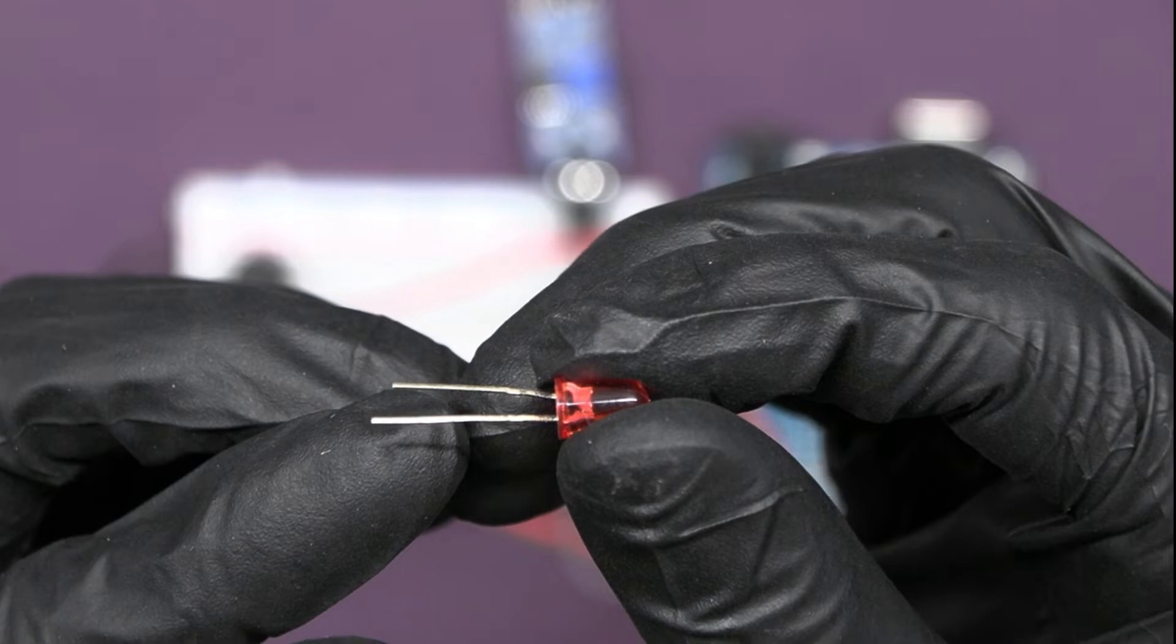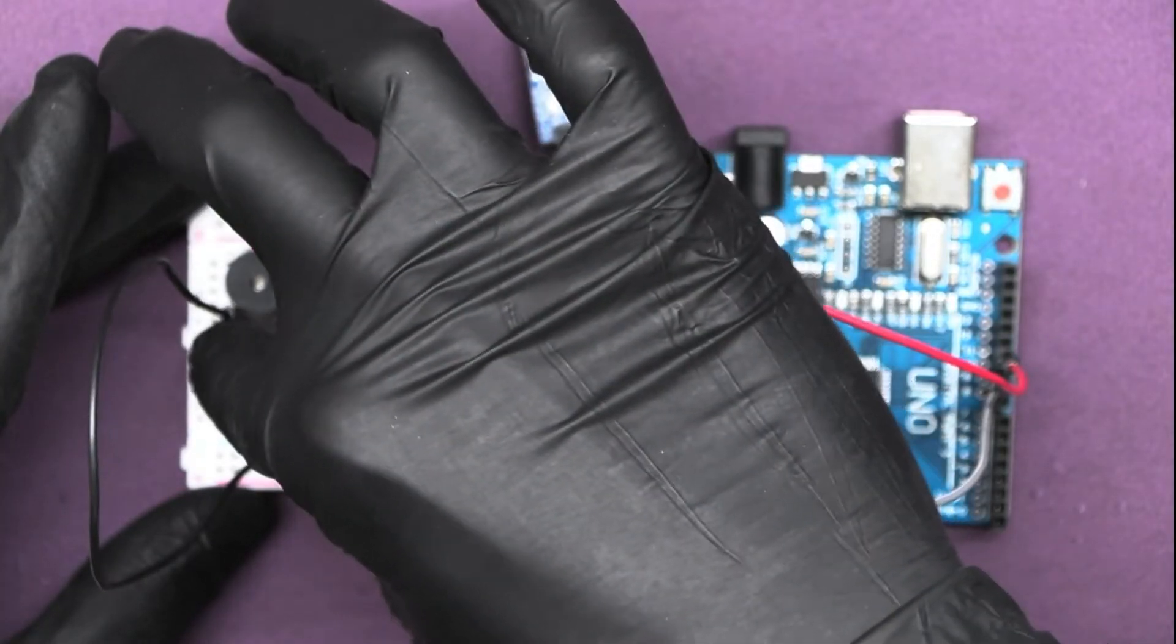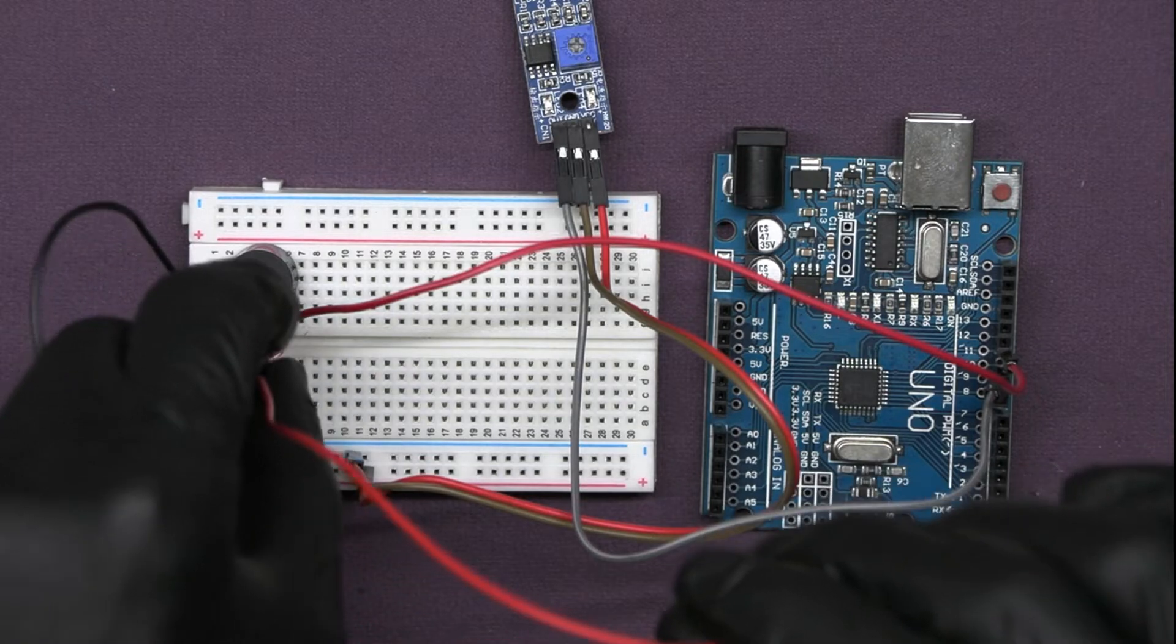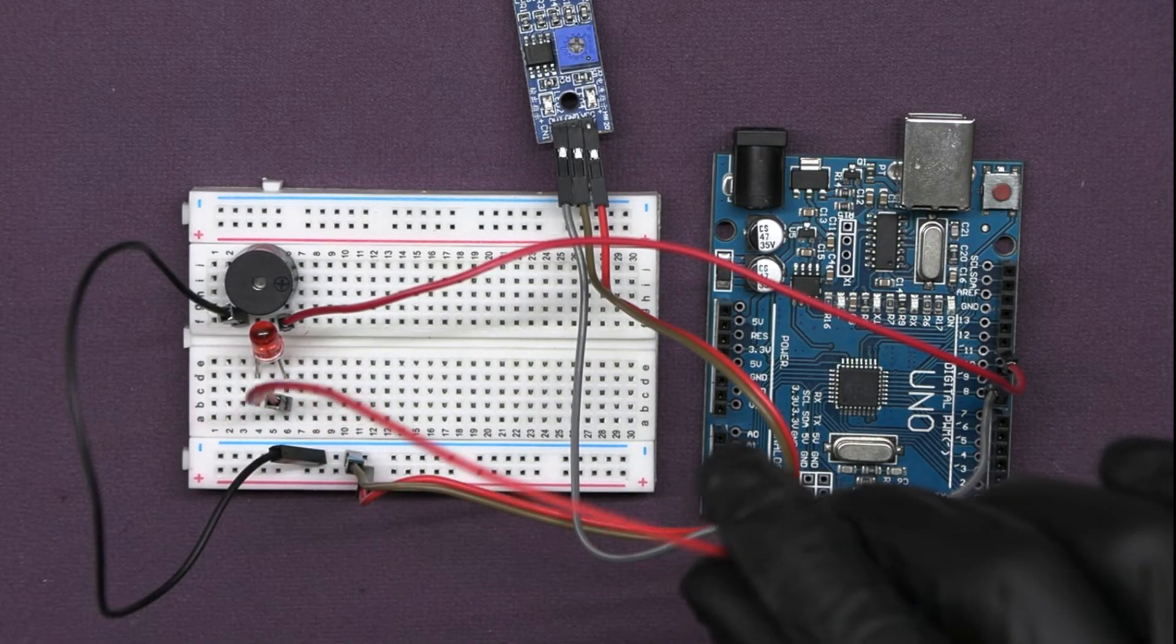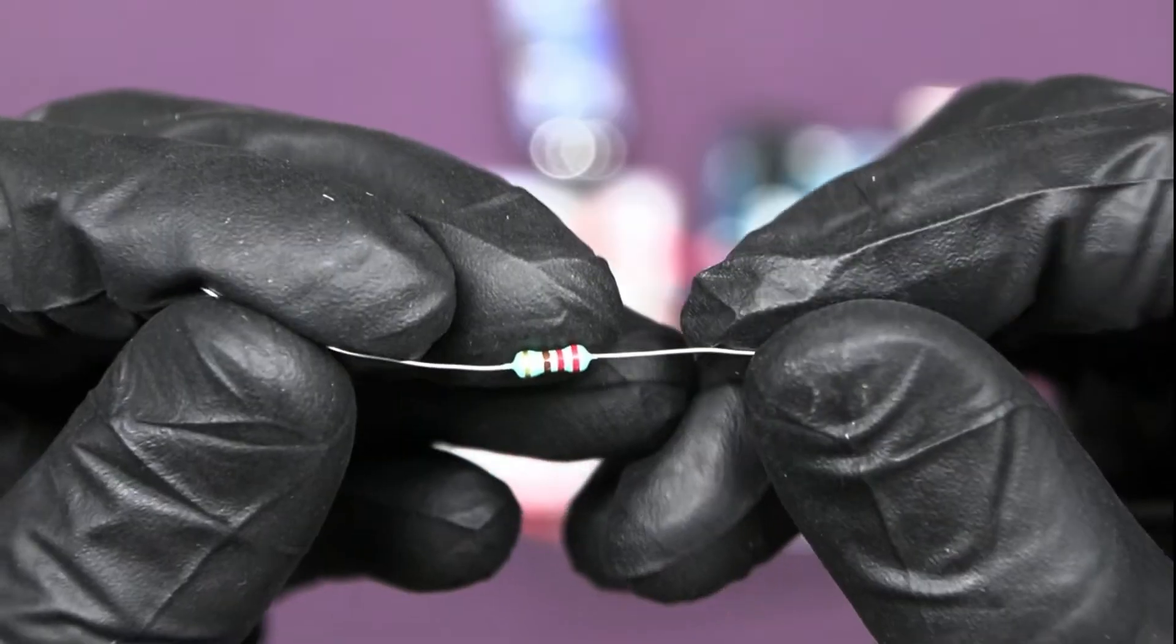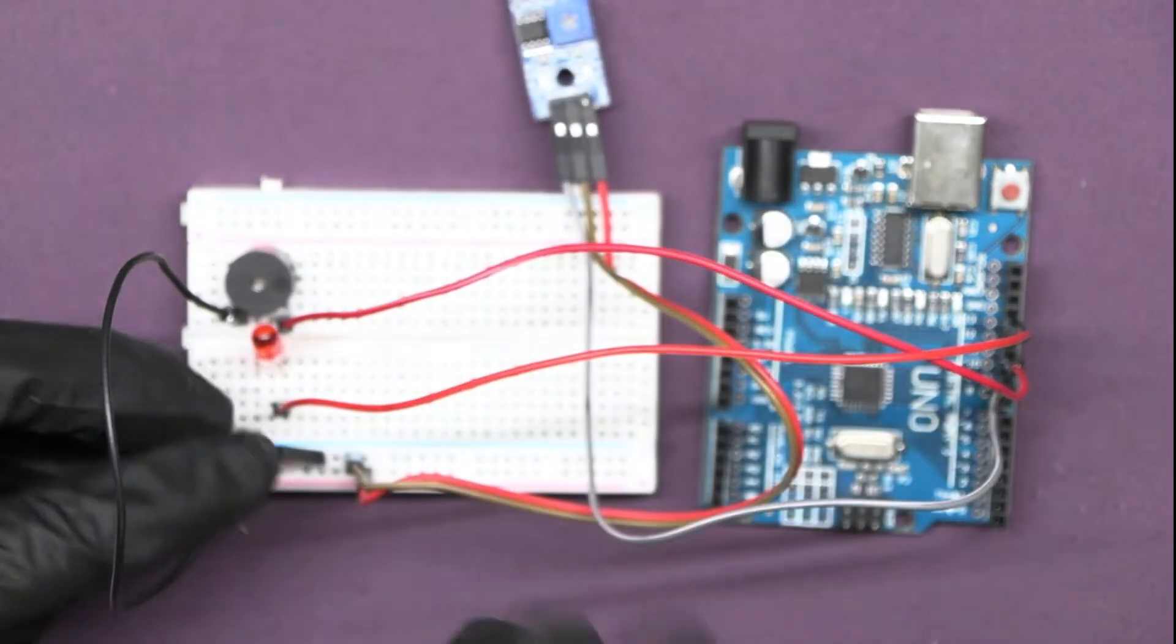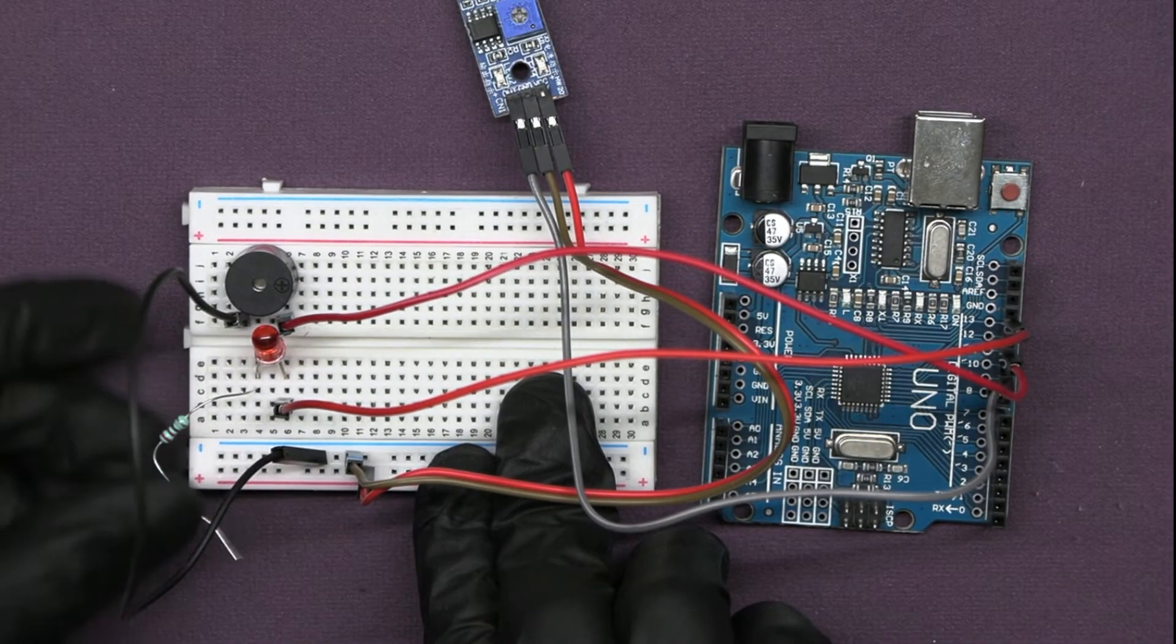Insert one LED in the breadboard. And connect the positive terminal of the LED to any digital Arduino pin like pin 13. And connect the resistor in between the negative terminal of LED to the ground bus of the breadboard.